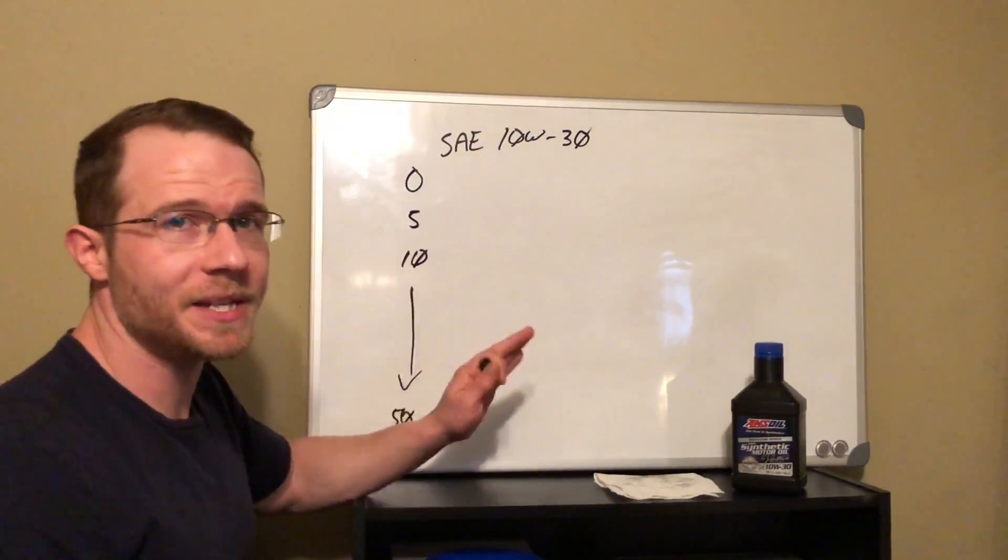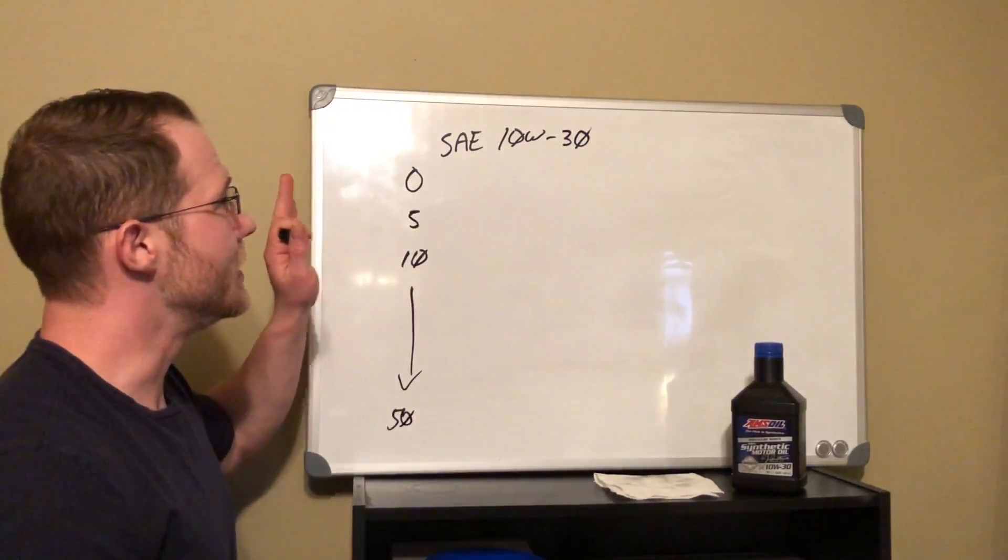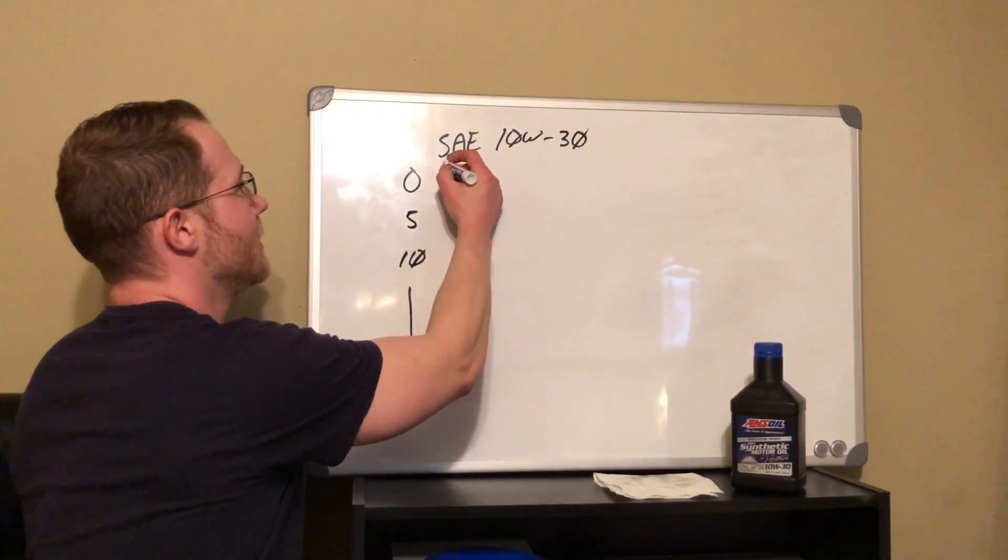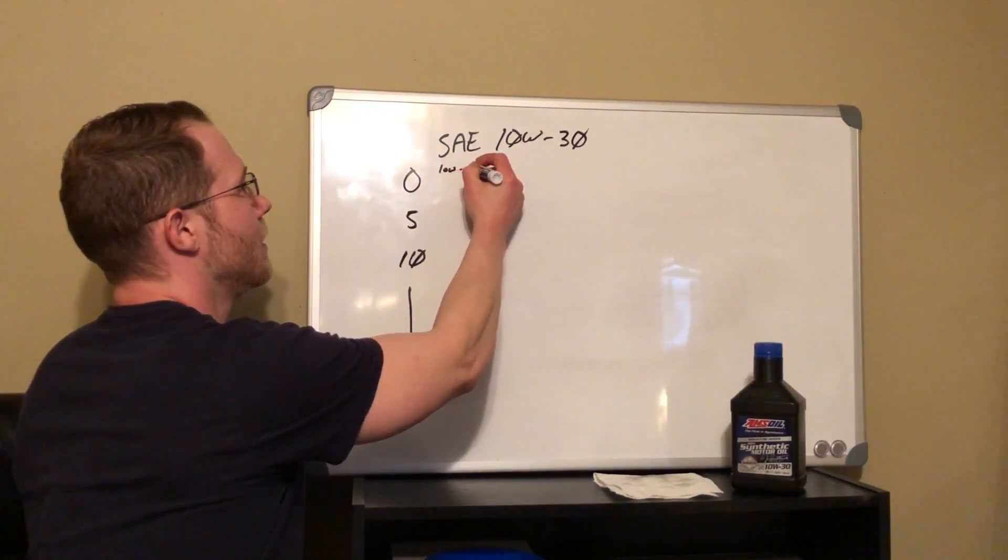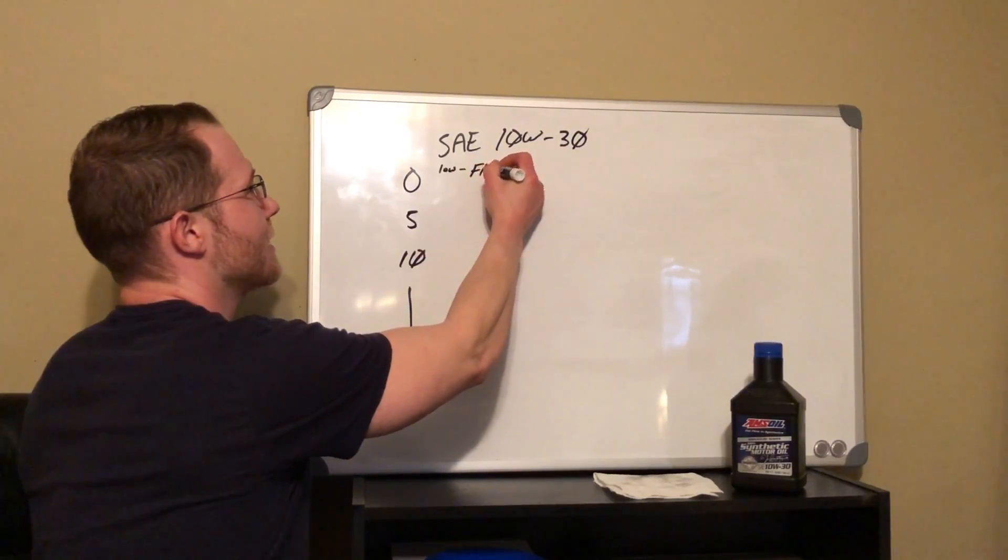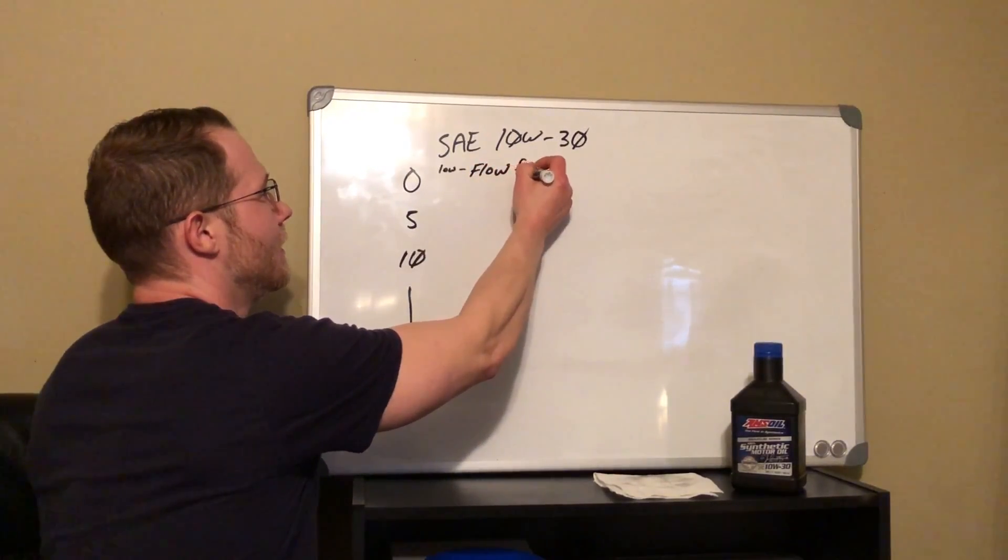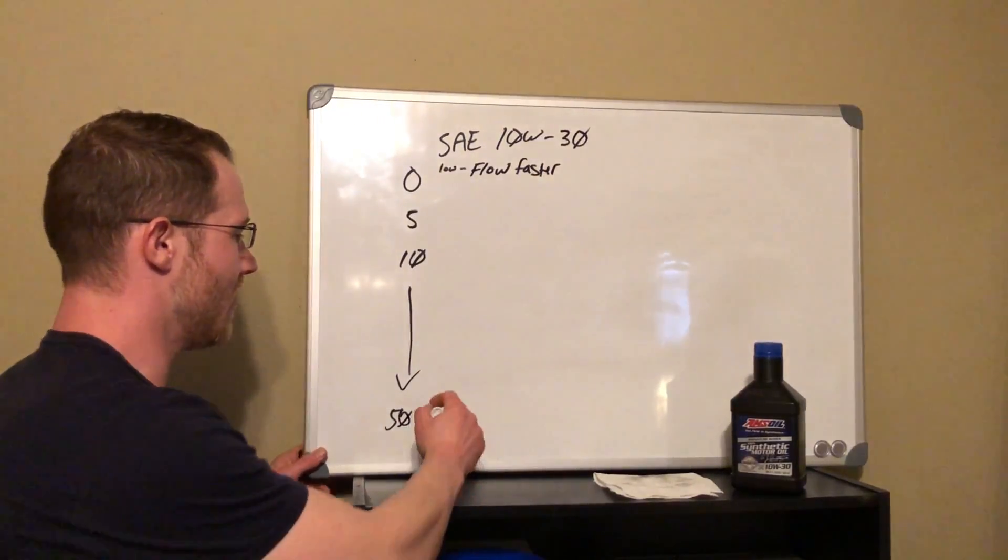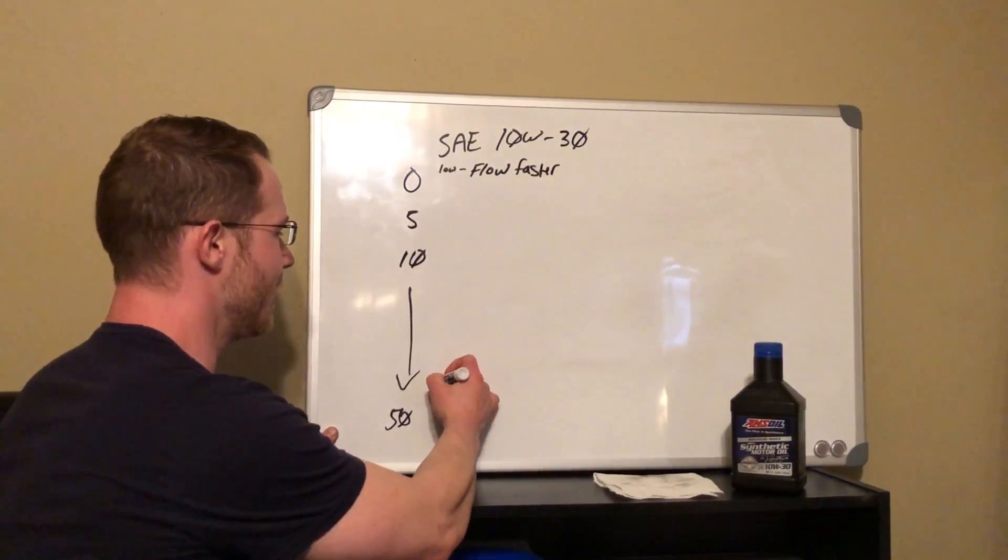So the basic gist is that 0 flows faster. The lower the number, it flows faster. And then the higher the number, obviously it flows slower.